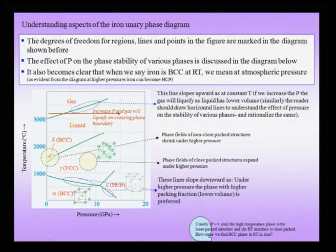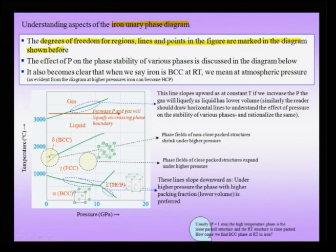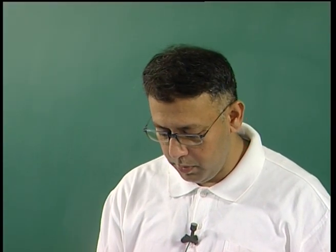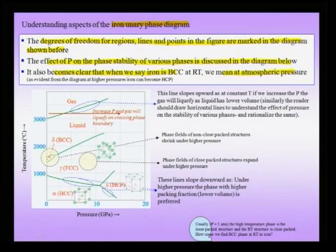When we say iron is BCC at room temperature, we usually imply atmospheric pressure. When you increase the pressure, a phase transformation takes place. For instance, if you are at a temperature where the delta form is stable and increase the pressure, you will see a phase transformation from delta to gamma. Similarly, if you are in the phase field where the alpha (BCC) form is stable and increase the pressure, you will observe a phase transformation from alpha to gamma.